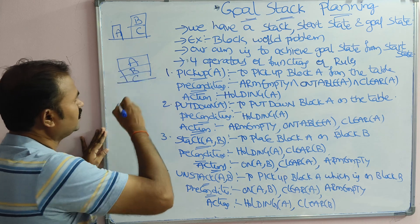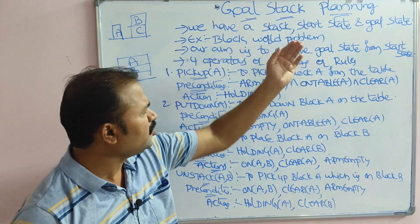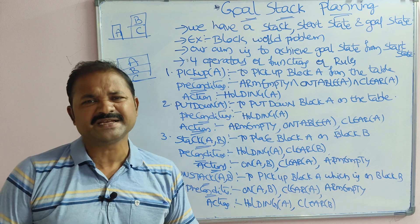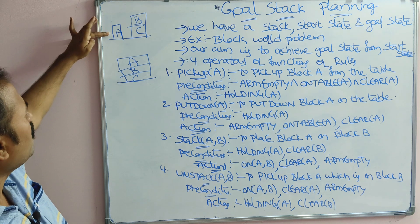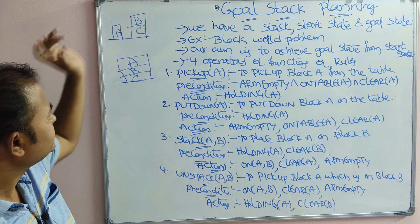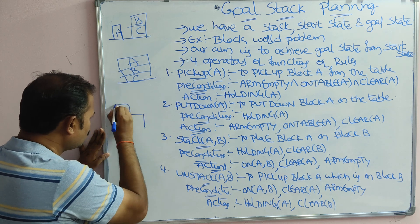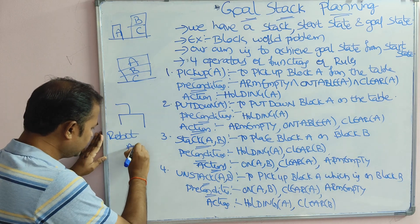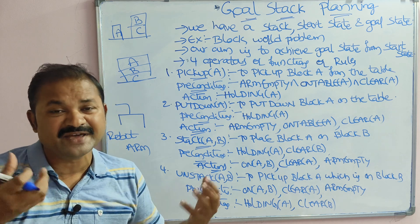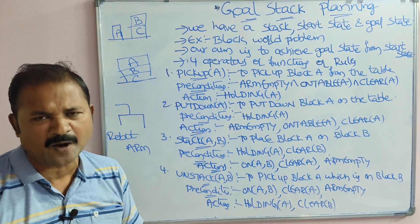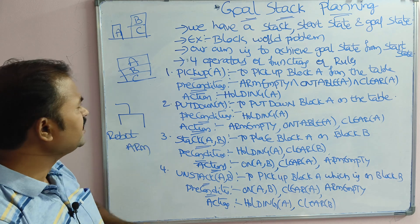The major example for goal stack planning is the block world problem. The block world problem means we have a set of blocks — block A, block B, and block C — and we have a robot arm. With the help of the robot arm we can manipulate the blocks and perform various operations such as pickup and put-on.